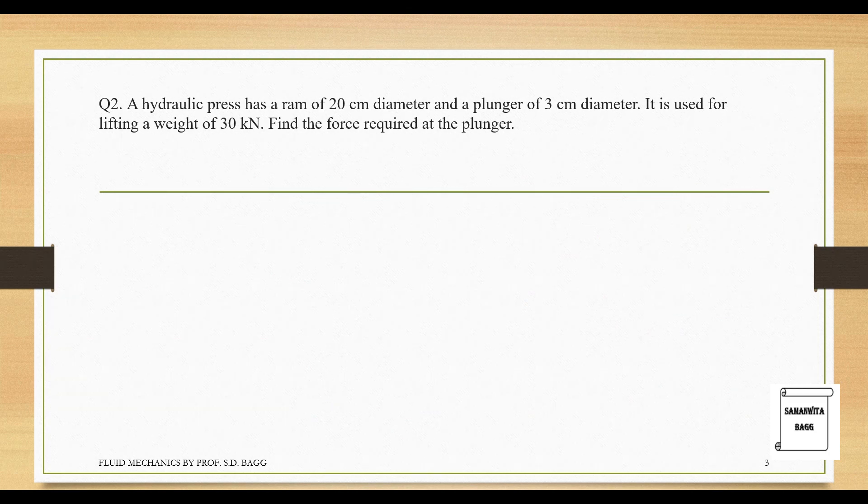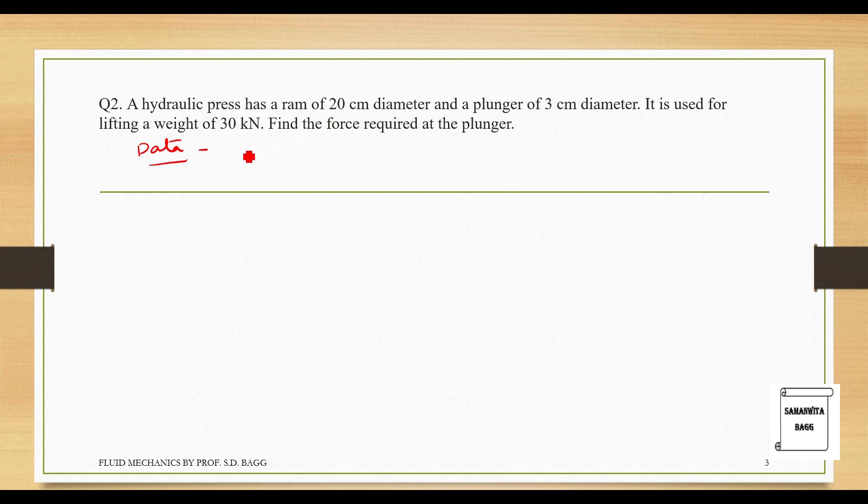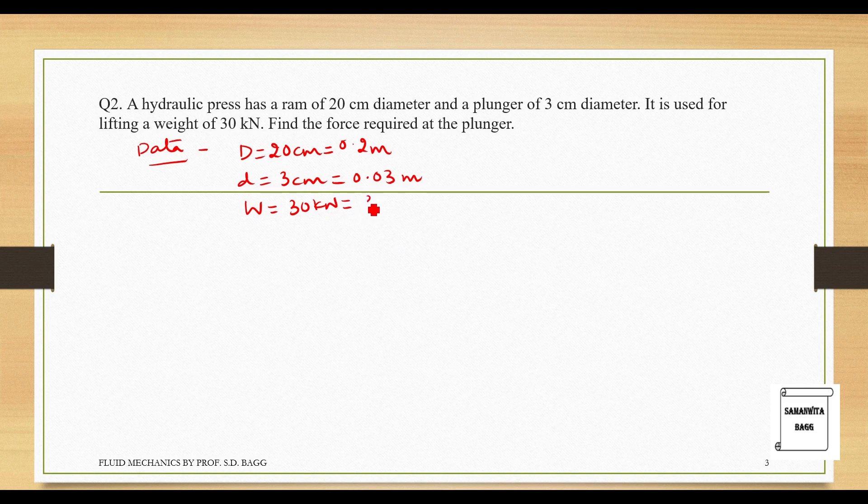A hydraulic press has a ram of 20 cm diameter. So, given data, the hydraulic press has a ram of 20 cm diameter. Let's take diameter as 20 cm, 0.2 meter. I have taken capital D as a symbol. And a plunger of 3 cm diameter. So, the small d is 3 cm, 0.03 m. It is used for lifting a weight of 30 kN. So, the value of W is given as 30 kN, which is 30 into 10 raised to 3 N. Find the force required at the plunger.